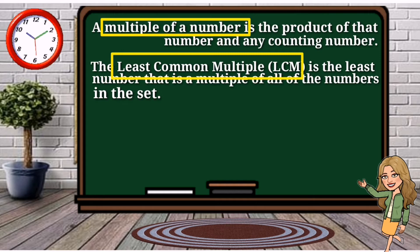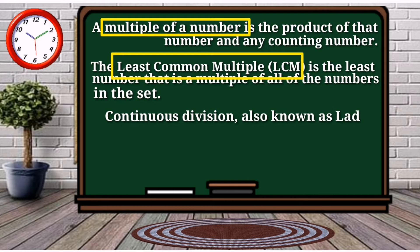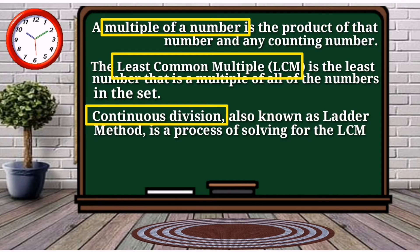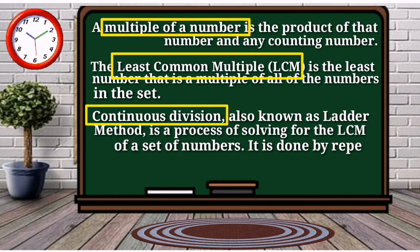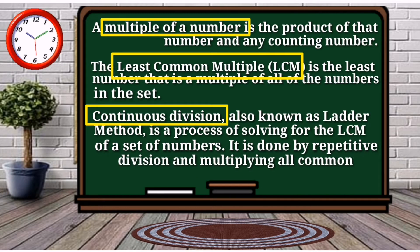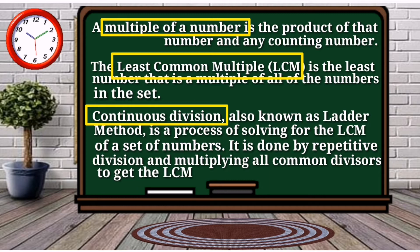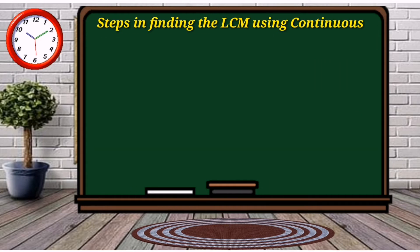For example, the least common multiple of relatively prime numbers is their product. To find the LCM, we can use the listing method or the continuous division method. Continuous division is more efficient when three or more numbers are involved. Also known as the ladder method, it is a process of solving for the LCM by repetitive division and multiplying all common divisors.